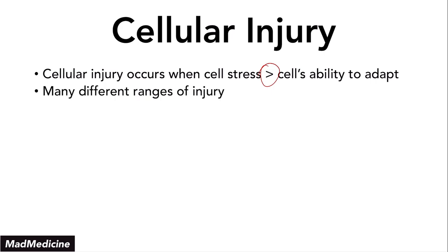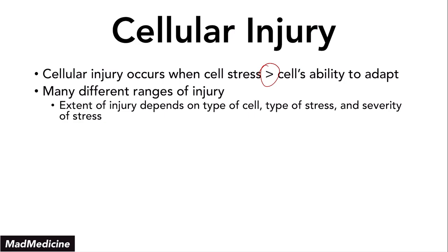There are going to be many different ranges of injury you should be aware of, because the injury that occurs is not always the same. The extent of the injury is going to depend on the type of cell, the type of stress, and the severity of the stress. There are multifactorial conditions to cellular injury — a multifactorial pathway that leads to a pathologic state, determined by the type of cell exposed to stress, the type of stress, and definitely the severity of the stress.